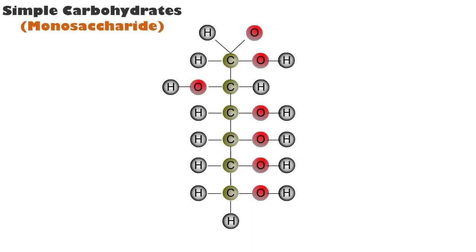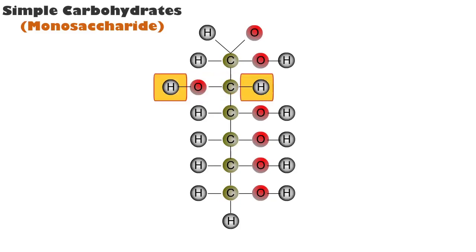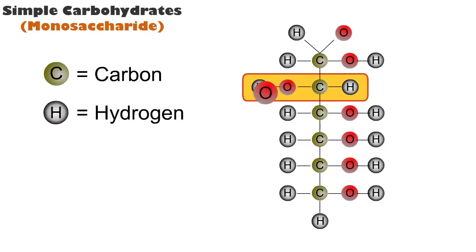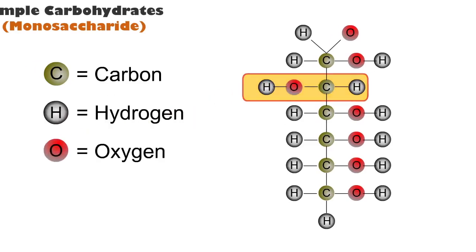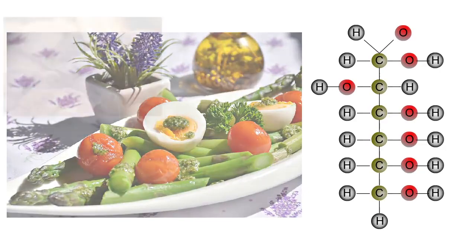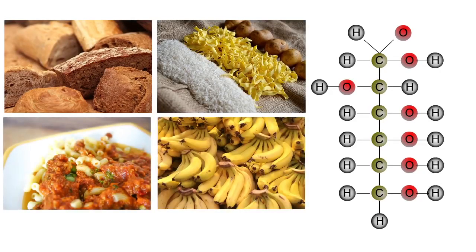Carbohydrates are organic molecules with the general formula of CHO in a 1 to 2 to 1 ratio. In this formula, C stands for carbon, H for hydrogen, and O for oxygen. Although carbohydrates constitute only 1 to 2% of cell mass, they provide the raw fuel for cellular energy production.